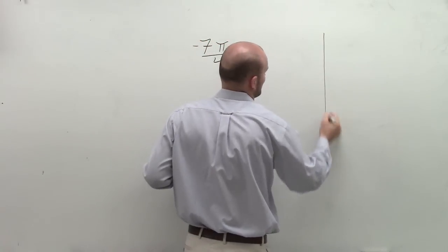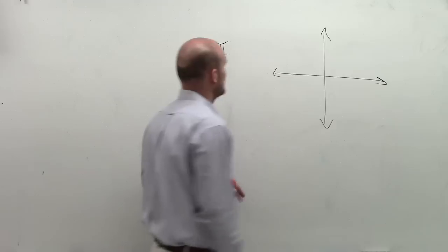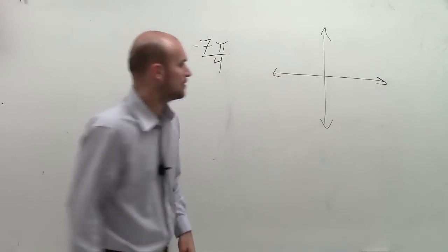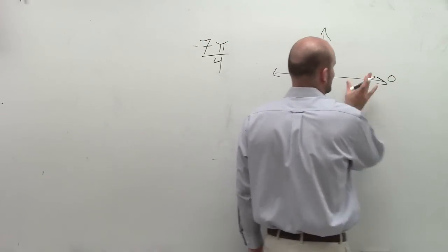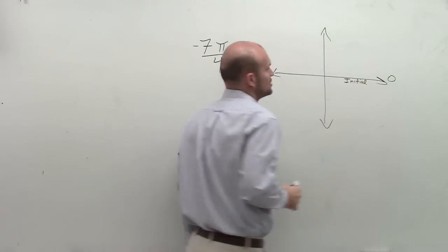So let's talk about our radians here. I want to graph negative 7π over 4. Always remember, ladies and gentlemen, here is our initial side. That's going to be our starting point.